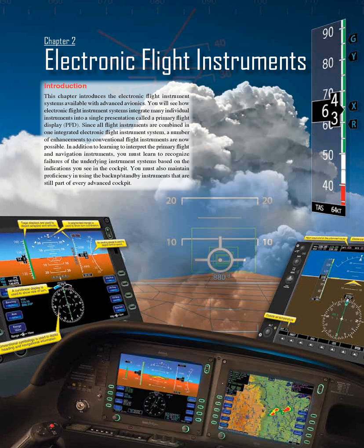Chapter 2: Electronic Flight Instruments Introduction. This chapter introduces the electronic flight instrument systems available with advanced avionics. You will see how electronic flight instrument systems integrate many individual instruments into a single presentation called a Primary Flight Display, PFD. Since all flight instruments are combined in one integrated electronic flight instrument system, a number of enhancements to conventional flight instruments are now possible.